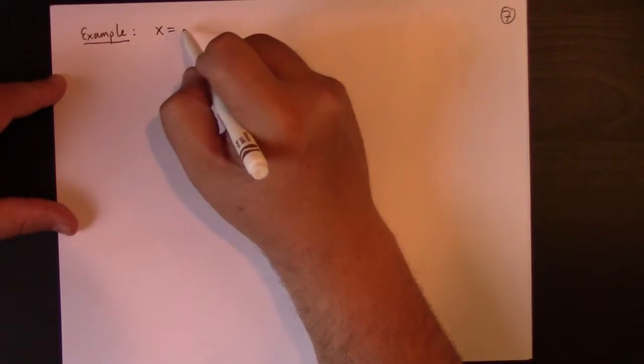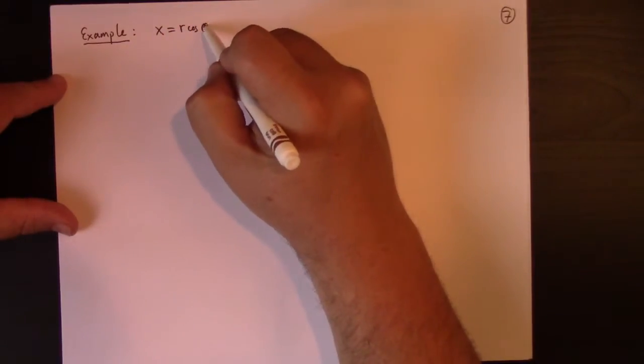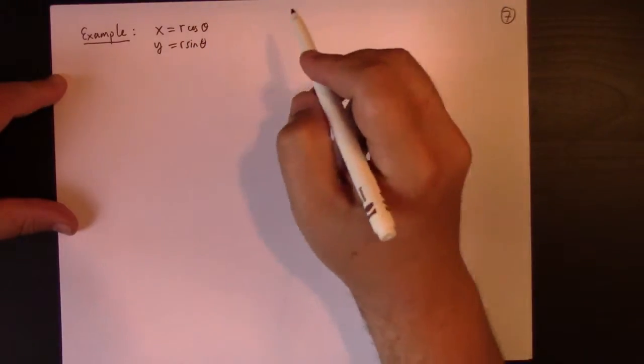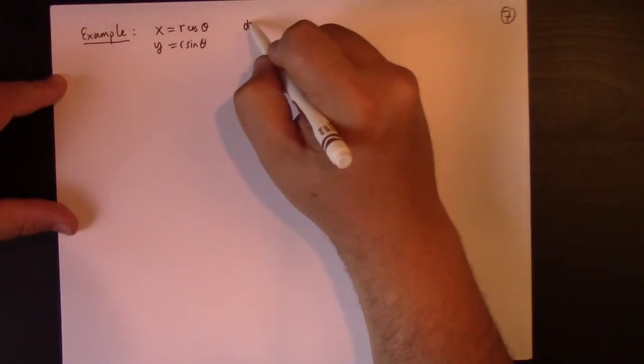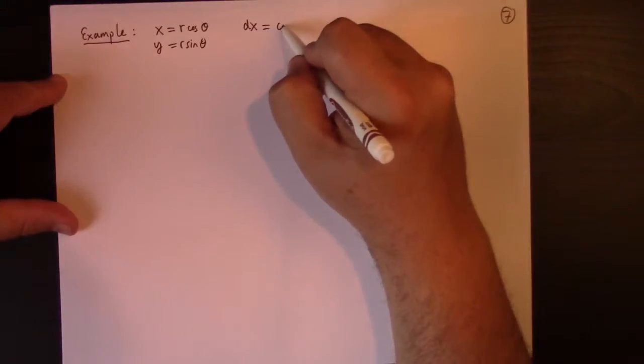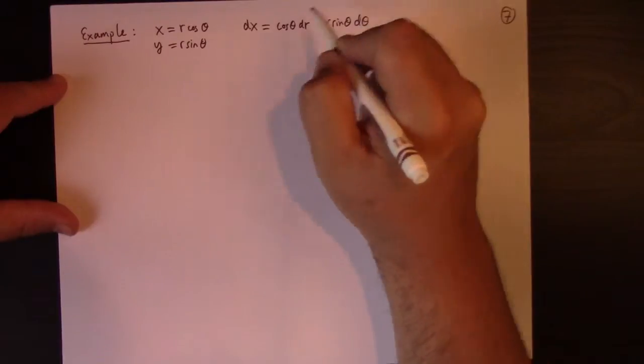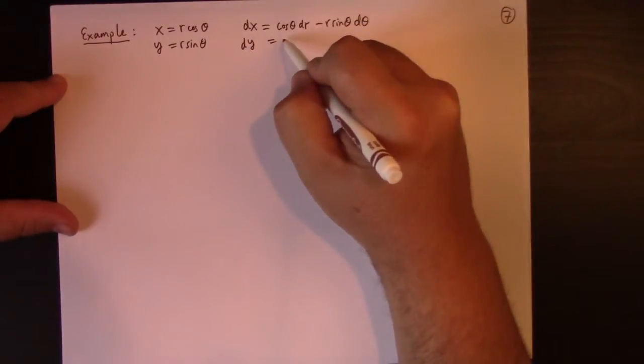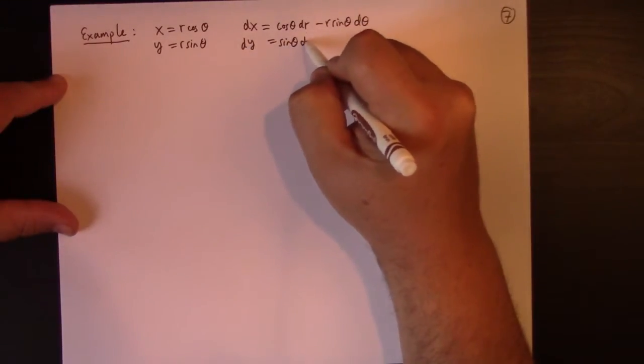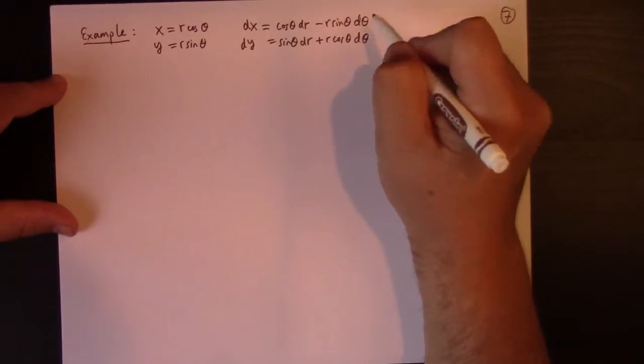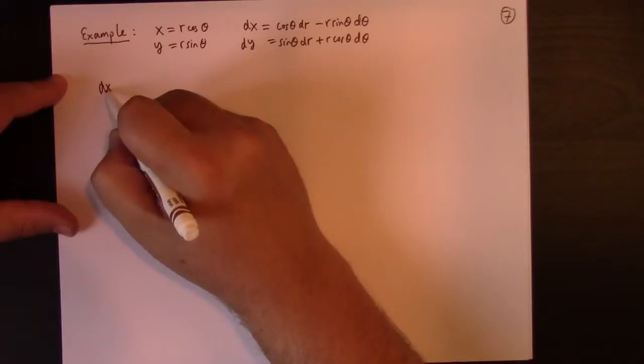If I have x equals to R cosine theta, if I have y is equal to R sine theta, well, then we can calculate dx is cosine theta dr minus R sine theta d theta. We can calculate dy is sine theta dr plus R cosine theta d theta. So, then, if I calculate dx wedged dy, I can trade that for what?